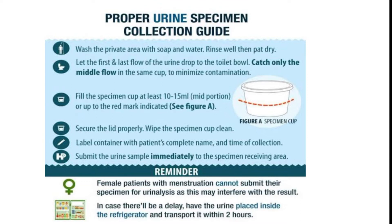Collect the midstream urine into the specimen collection container. Fill the specimen cup with at least 10 to 15 ml, up to the red mark indicated. There is a picture showing the 10 to 15 ml level on the specimen collection container at the red marker.